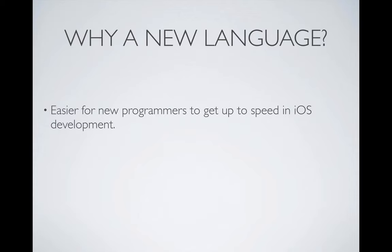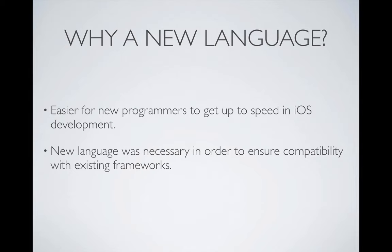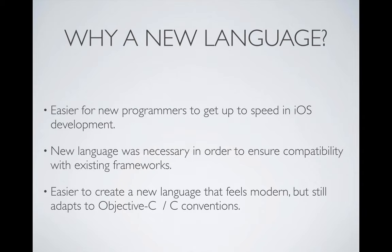Objective-C had its share of warts. It was basically an extension of the C programming language, and syntactically there were lots of things that were confusing to programmers when they were initially introduced to it. A new language was also necessary in order for Apple to ensure compatibility with existing frameworks — this is why they didn't adopt an existing modern language like Python or Ruby. It was much easier to create a new language that looks and feels modern, but still integrates really well with the legacy Objective-C and C conventions that Apple platforms have.